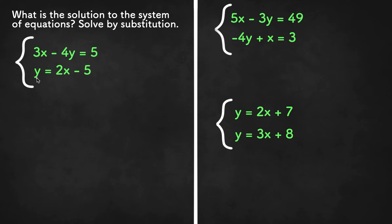So since this y is isolated, we know that y equals 2x minus 5 and this 2x minus 5, we can plug this in to this y right over here because they mean the same thing. And when we plug this in we are going to be left with one equation. So if we plug this in we get 3x minus 4 times 2x minus 5 equals 5.